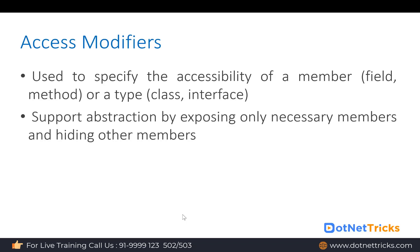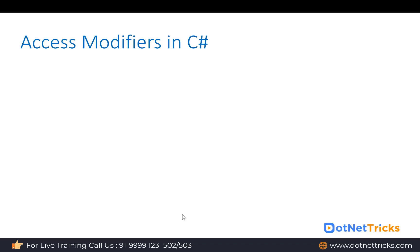Access modifiers support abstraction by exposing only necessary members and hiding others. When we create a class, we define members — some we make private and some we make public. Members we make private are hidden, and we only expose the members that are necessary. This is the way to support abstraction using access modifiers.